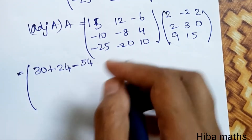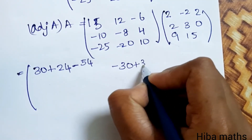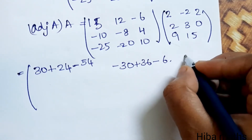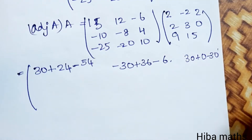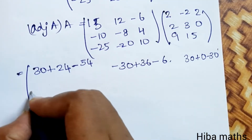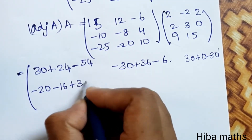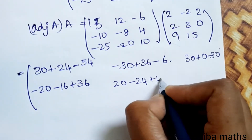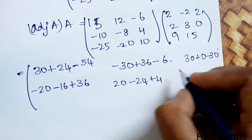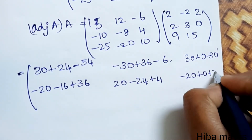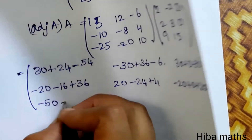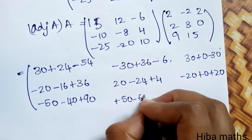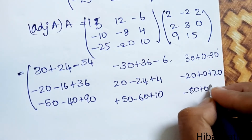First row, second column: minus 30 plus 36 minus 6. First row, third column: 30 plus 0 plus 0 minus 30. Second row, first column: minus 20 minus 16 plus 36. Second row, second column: 20 minus 24 plus 4. Second row, third column: minus 20 plus 0 plus 20. Then minus 50 minus 40 plus 90; third row second column: plus 50 minus 60 plus 10; minus 50 plus 0 plus 50.